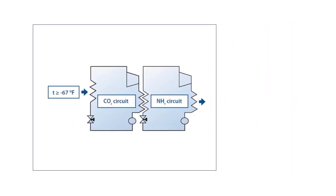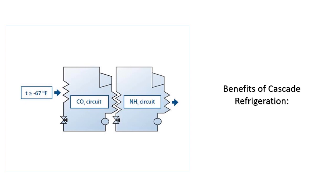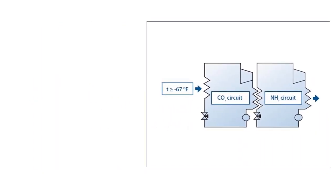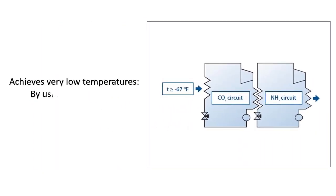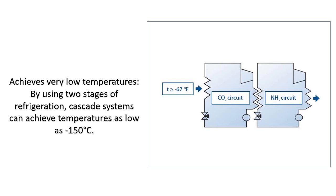Benefits of Cascade Refrigeration: Achieves very low temperatures. By using two stages of refrigeration, cascade systems can achieve temperatures as low as minus 150 degrees Celsius.